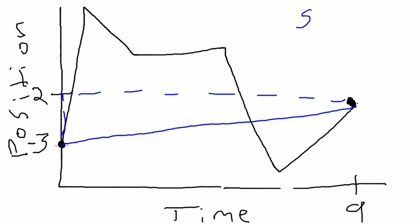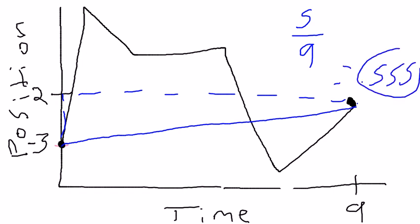That equals 5 over 9, which equals 0.555. And that's how you get the average velocity.